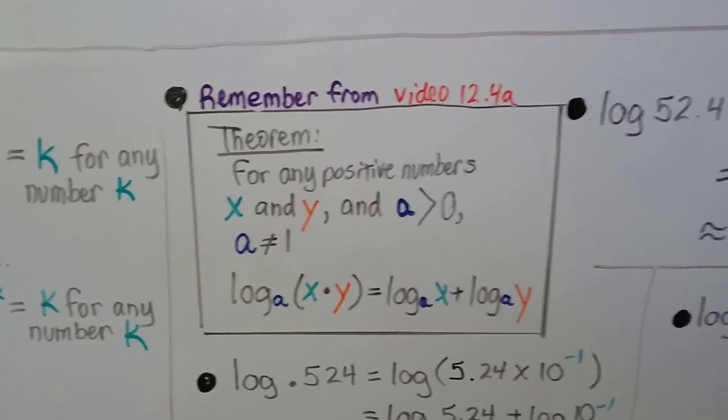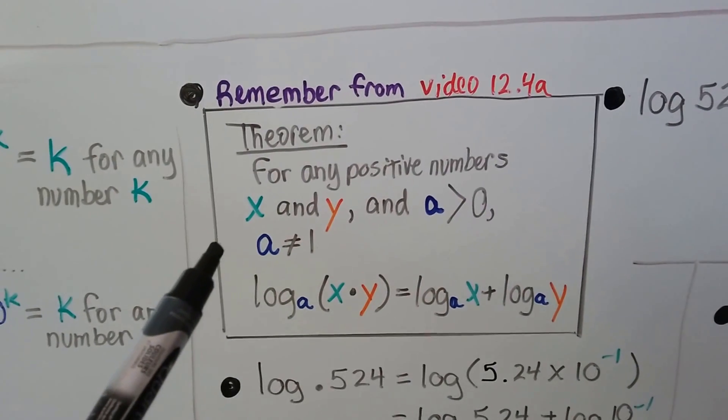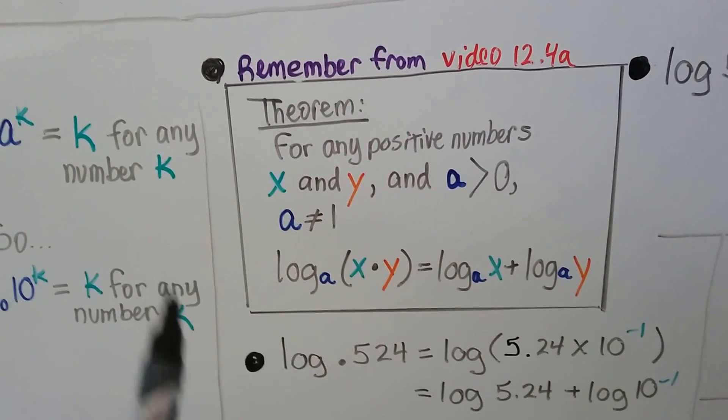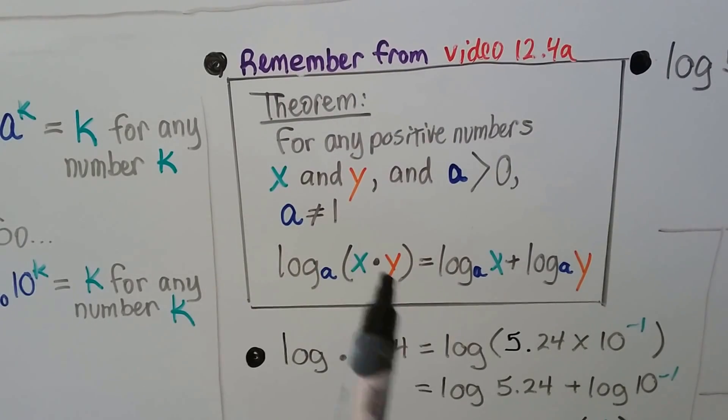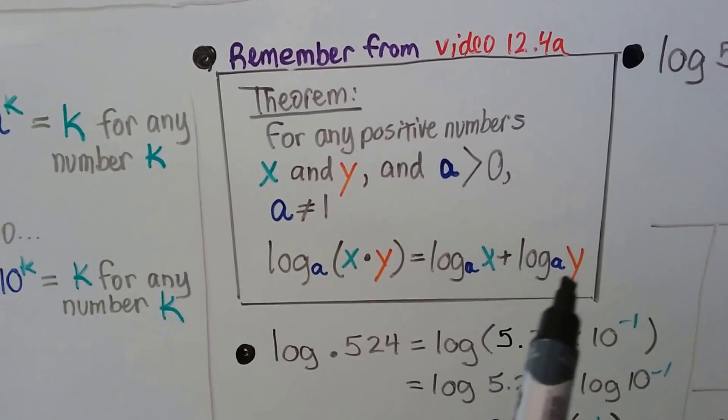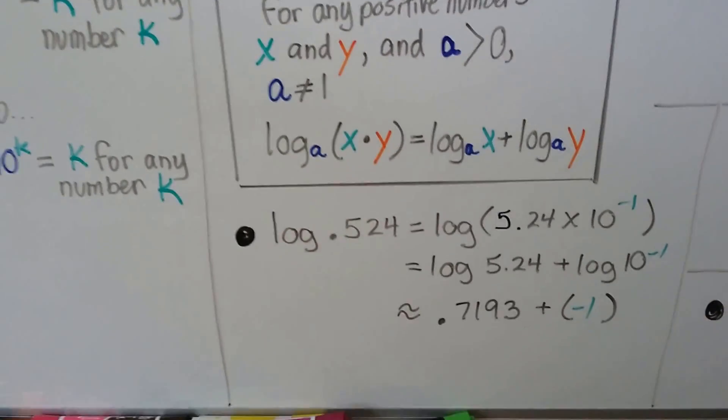And then we talked about in 12.4a this theorem that for any positive numbers x and y, if a is greater than 0 and it doesn't equal 1, if we have x times y here, it could be broken up into add-ins of log base a of x plus log base a of y.